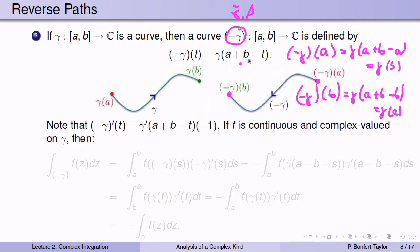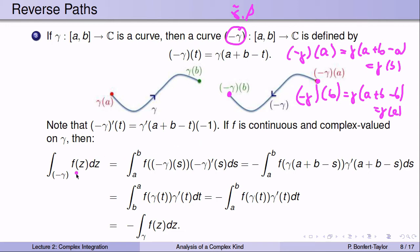The derivative of minus gamma is: minus gamma prime(t) equals gamma prime(a+b-t) times minus one, by the chain rule. If f is a continuous complex-valued function on gamma, then the integral over minus gamma of f(z) dz equals the negative of the integral over gamma of f(z) dz. So integrating over a reverse path flips the sign of the integral.